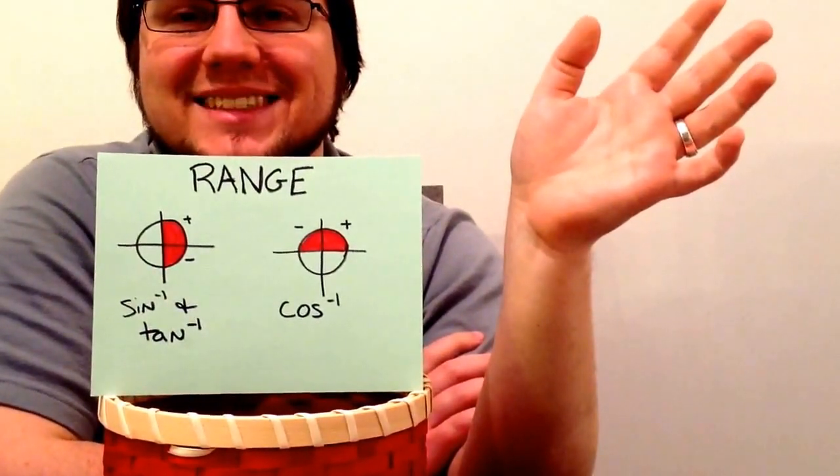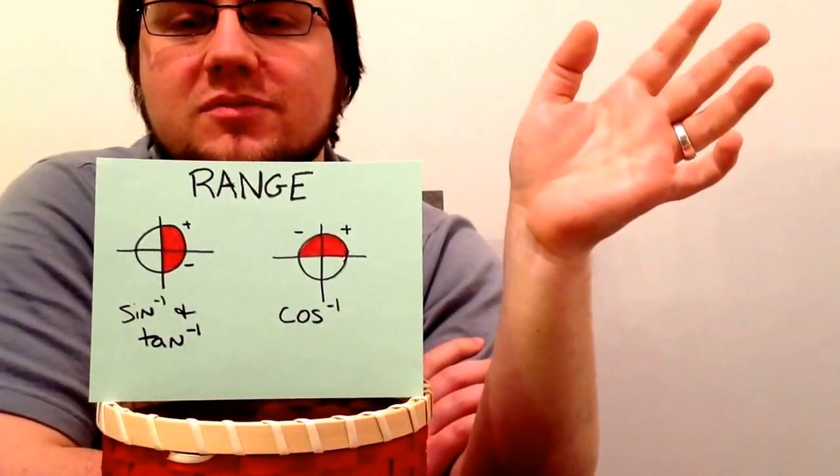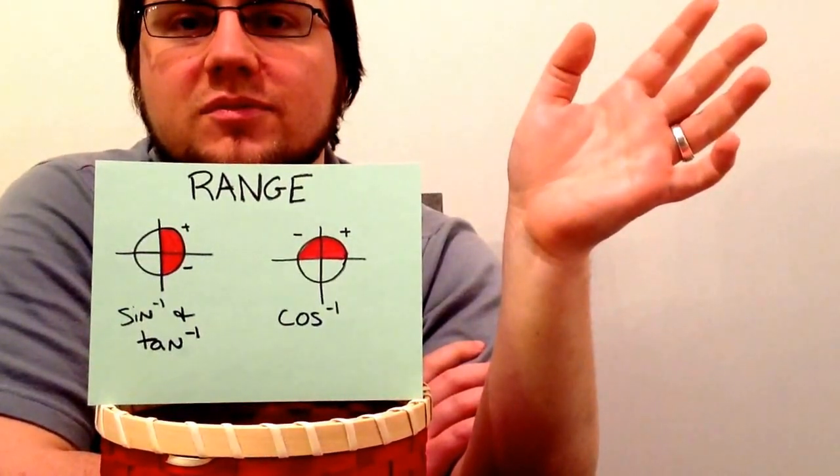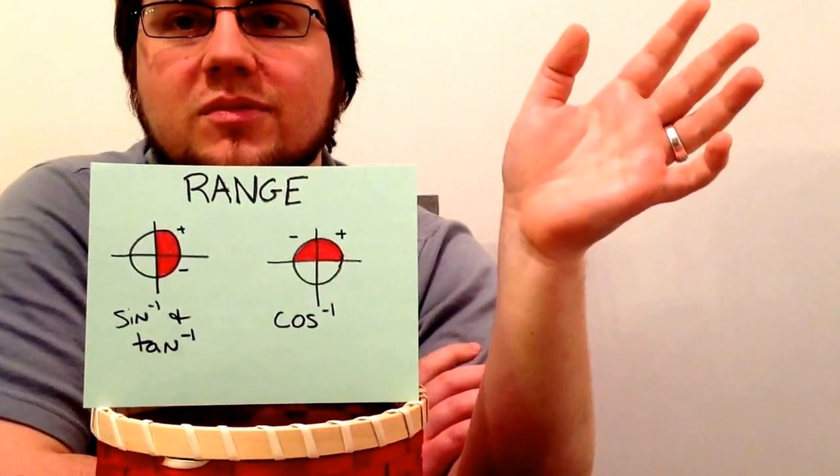Remember with sine and tangent, our inverses are in the first and fourth quadrant, and our cosine is in the first and second quadrant, and our answer is going to be based on whether or not our ratio initially was positive or negative.